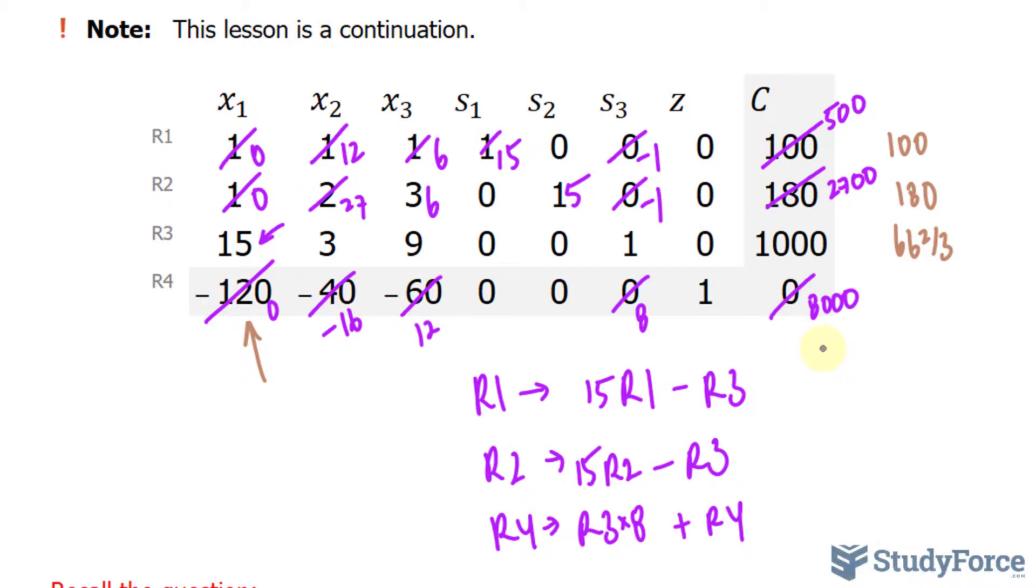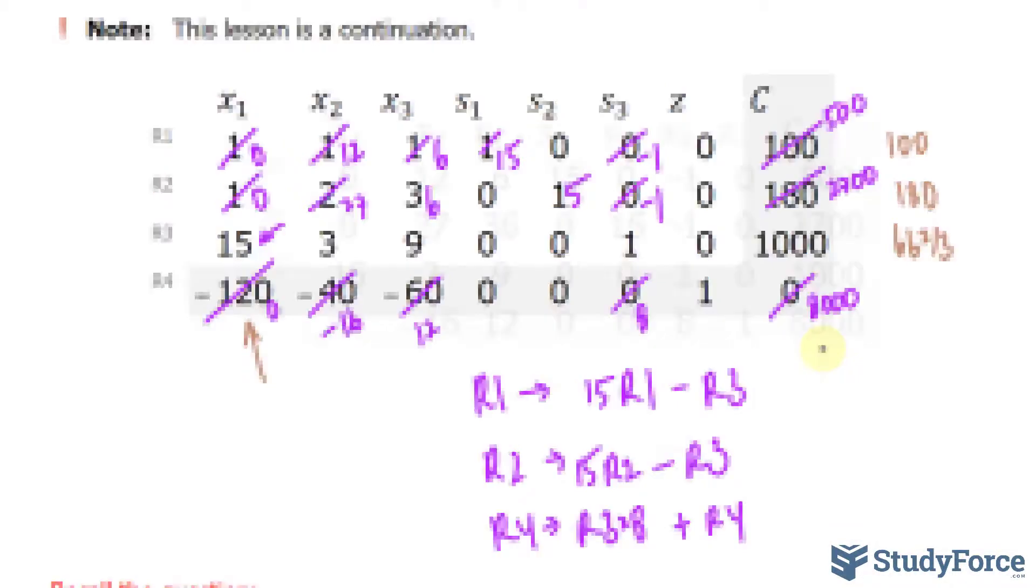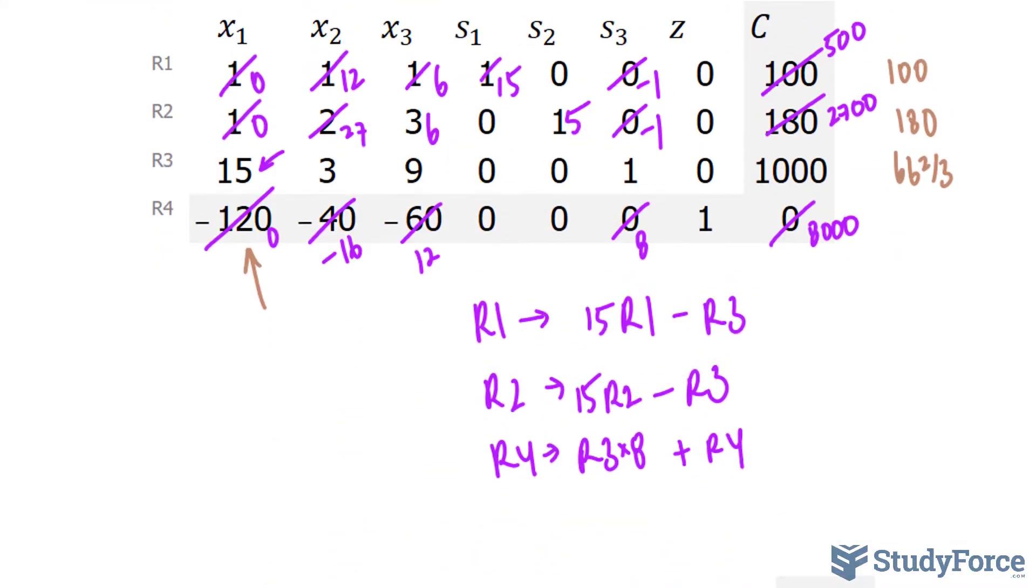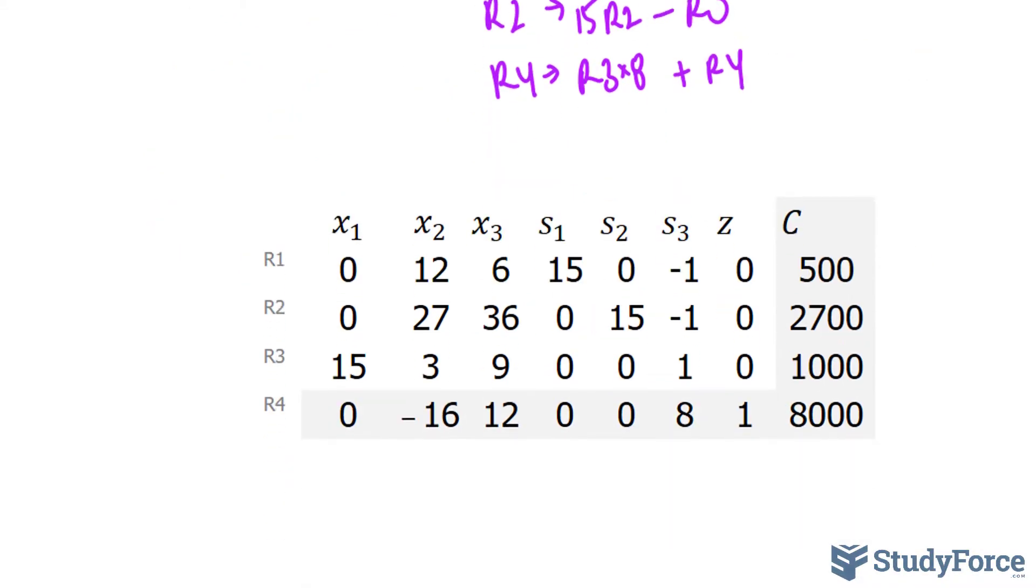Of course, at this point, you want to recreate your matrix so that you're not confused with all the annotations. Your new matrix should look like this. Now that I've recreated my matrix, take a look. Row 3 has not changed. It's the exact same thing as before. Rows 1 and rows 2 and row 4 have changed.